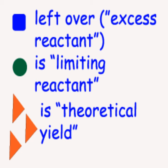And the three orange triangles that are created at the end are called theoretical yield. So three orange triangles would be the theoretical yield in this reaction.